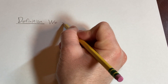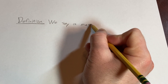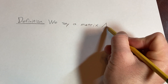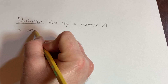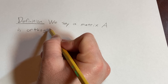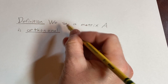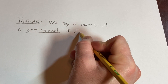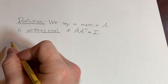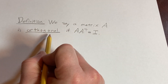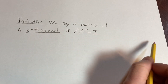So we say a matrix A is orthogonal if A times A transpose is equal to the identity matrix. So that's going to be our definition of orthogonal — A is going to be an orthogonal matrix if A times its transpose gives us the identity.